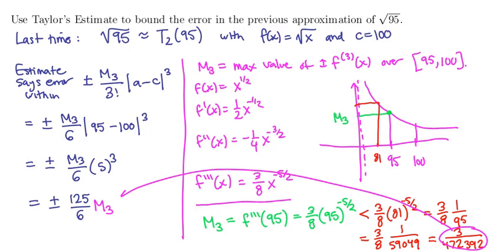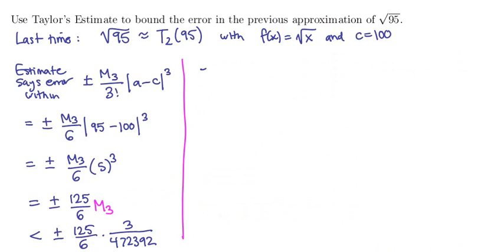We plug that in over here. And we have a revised estimate of being within plus or minus 125 sixths times 3 over 472,392. That's our estimate. We can clean this up a little bit right here. And be able to say that our error is within plus or minus 125 over 6 times 3 over 472,392.